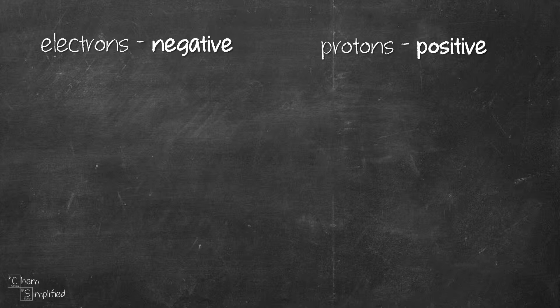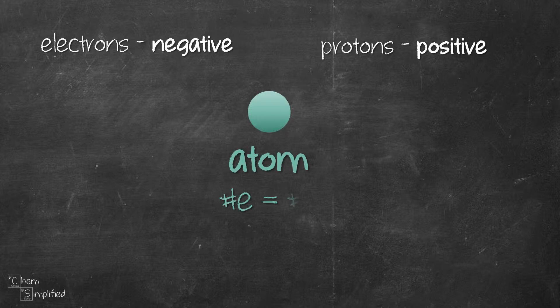Let's compare the number of electrons and protons. Keep in mind that electrons are negative while protons are positive. In an atom, the number of electrons is the same as the number of protons. That's why the atom is neutral, no charge.